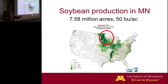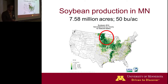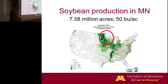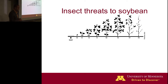First, soybean production. In Minnesota we are a very large producer of soybean. These data are a little dated, but over seven million acres, getting about 50 bushels per acre. Soybean is a hugely important crop in Minnesota. From the time it's planted until it's harvested, it is threatened by different pests.